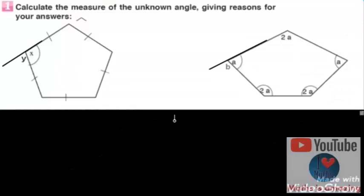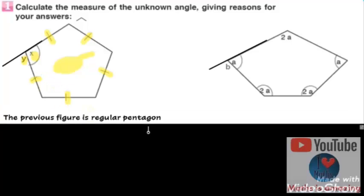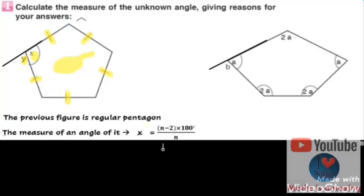Now we want to find the measure of x and y on the left one. We want to find the measure of x and the measure of y. x is an interior angle. The polygon is 1, 2, 3, 4, 5 - it's a pentagon, and it's regular because all sides are equal, so all angles are equal.